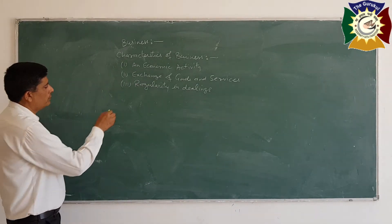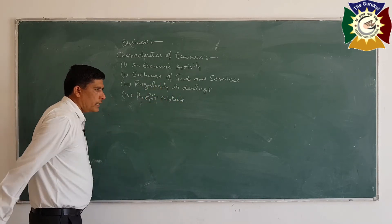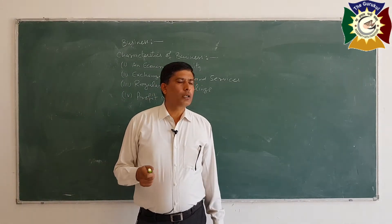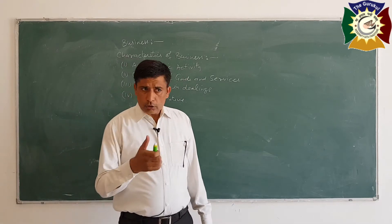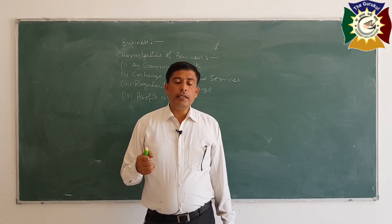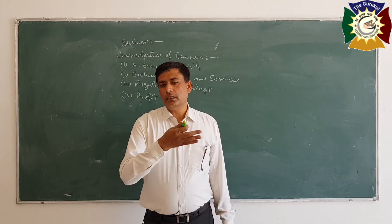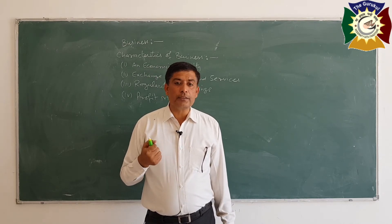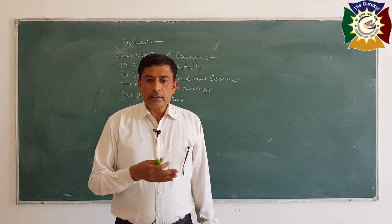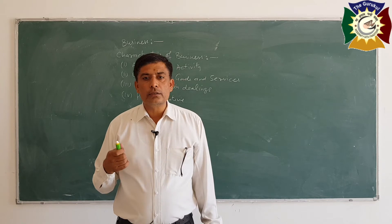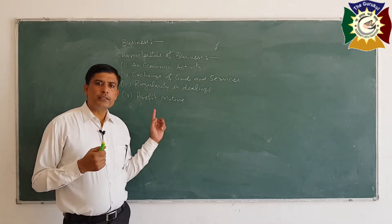The fourth feature is profit motive. Another feature of business is that business is run to earn money, to earn profit. The objective of every business will be to earn profit, though it is not certain that profit will always be earned — a business may incur loss also. But the objective is only to earn money. Even in today's scenario where some businessmen are not earning profit, businesses are closed down, they are paying electricity expenses, rent, and even salaries — we will still term it as a business, even though they are incurring losses instead of profits.